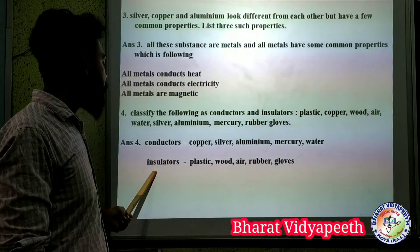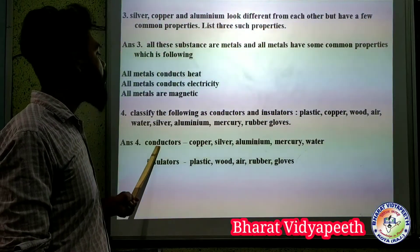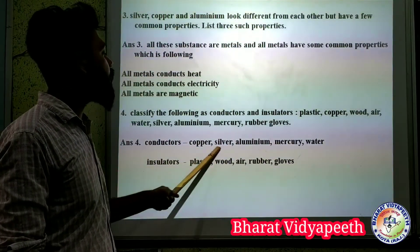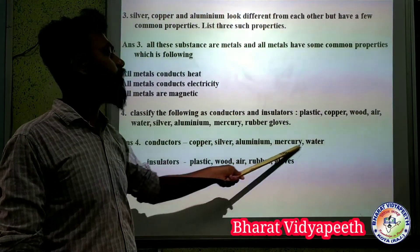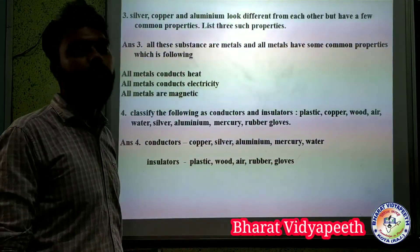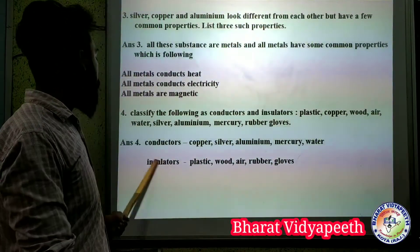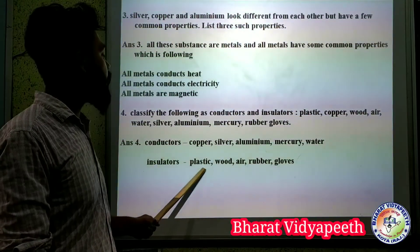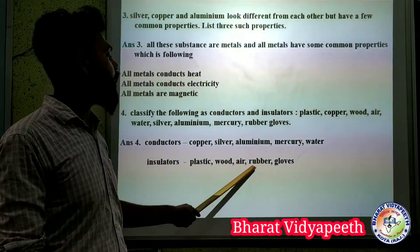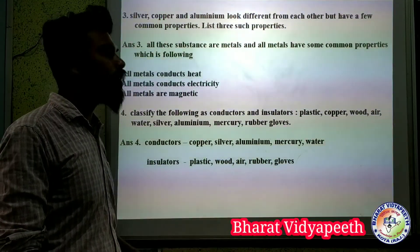Conductors are: copper, silver, aluminium, mercury, and water. Insulators are: wood, air, rubber, and grease.